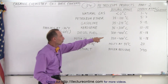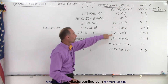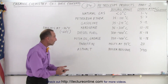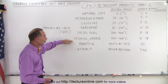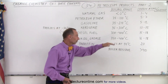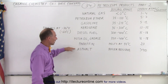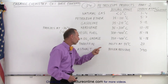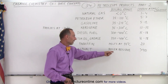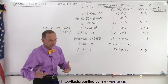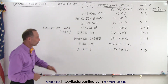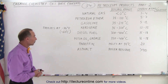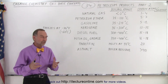Diesel fuel will not begin to boil until temperatures reach 300 to 400 degrees, making it very hard to vaporize. Motor oil and grease require 350 to 400 degrees. Paraffin and asphalt are essentially solid — paraffin has a melting temperature of about 55 degrees Celsius, while asphalt is a heavy sticky residue with no tendency to vaporize.